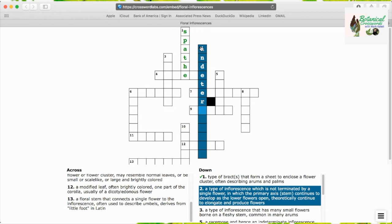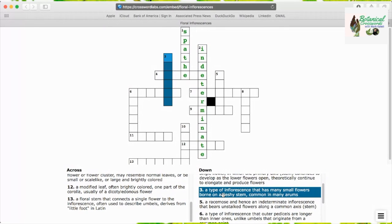Indeterminate is the next answer, a type of inflorescence which is not terminated by a single flower and in which the primary axis or stem continues to develop as the lower flowers open. Ragweed is a common example.